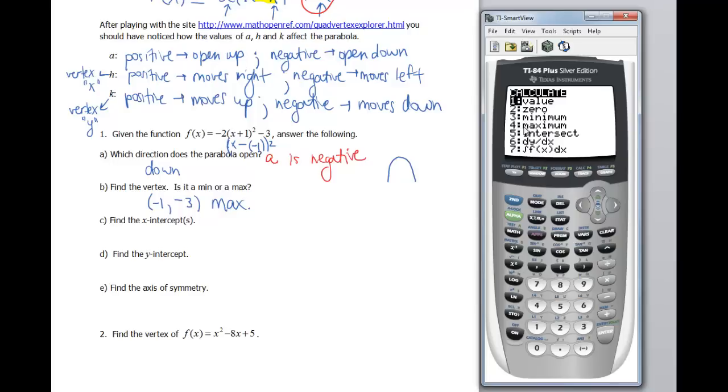So if you go to 2nd Calc, right here, option number 4. We would wanna pick that one because we have a maximum. If our parabola opened up, we'd wanna pick option number 3, which is a minimum. So I'm gonna pick option 4. Now it asks me for a couple things. It wants the left bound, so I'm gonna need to toggle to the right until my cursor gets over on the left side. Hit enter. Now it wants the right bound, so I'm gonna need to toggle over on the right side. Hit enter. Now it wants a guess. Hit enter. And sure enough, it gives me exactly negative 1, negative 3.